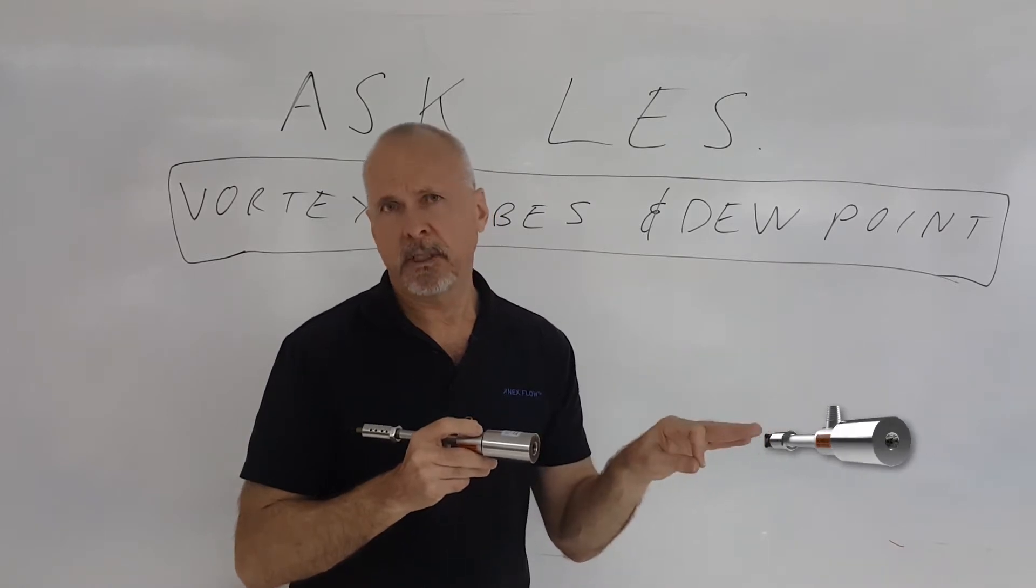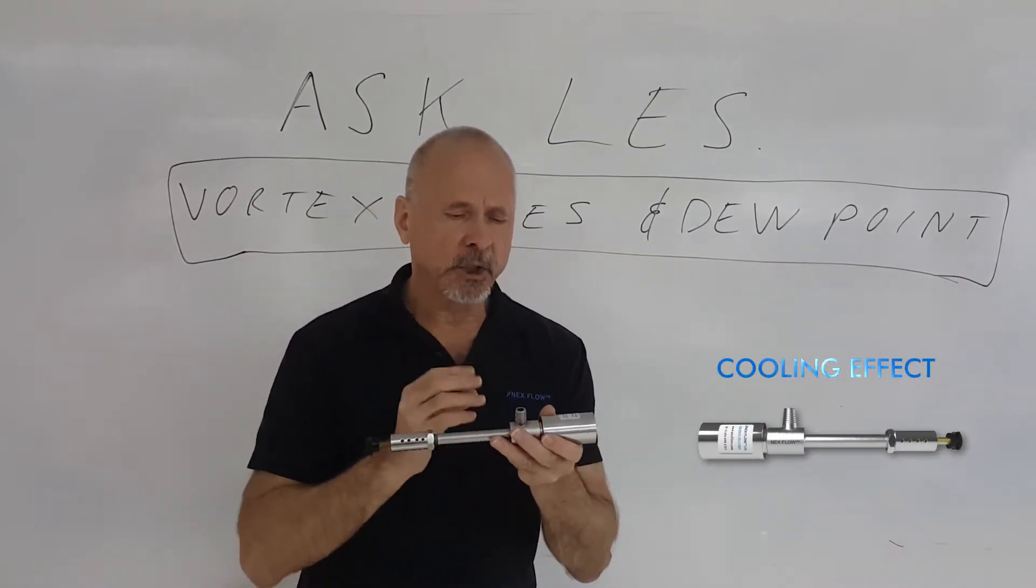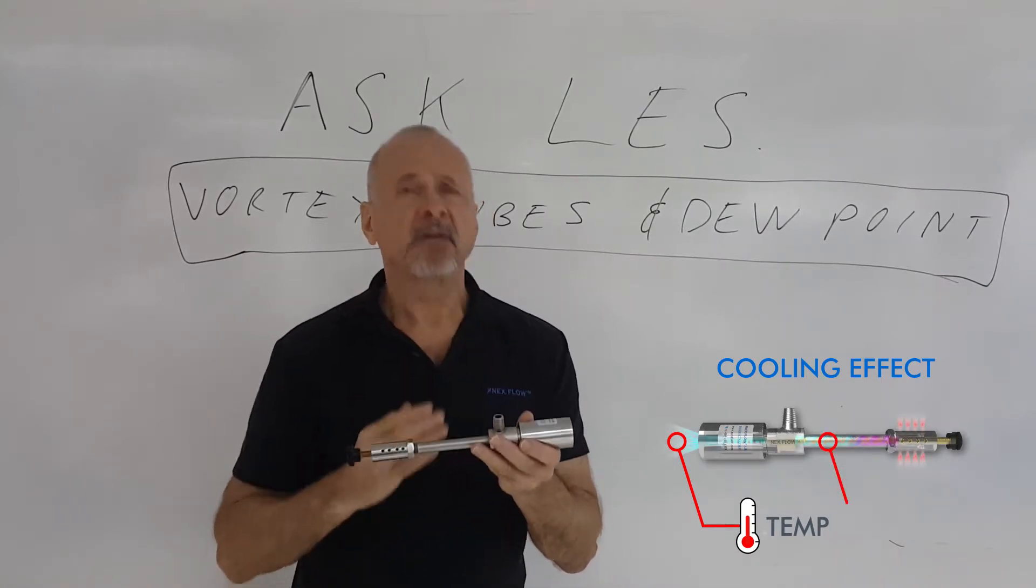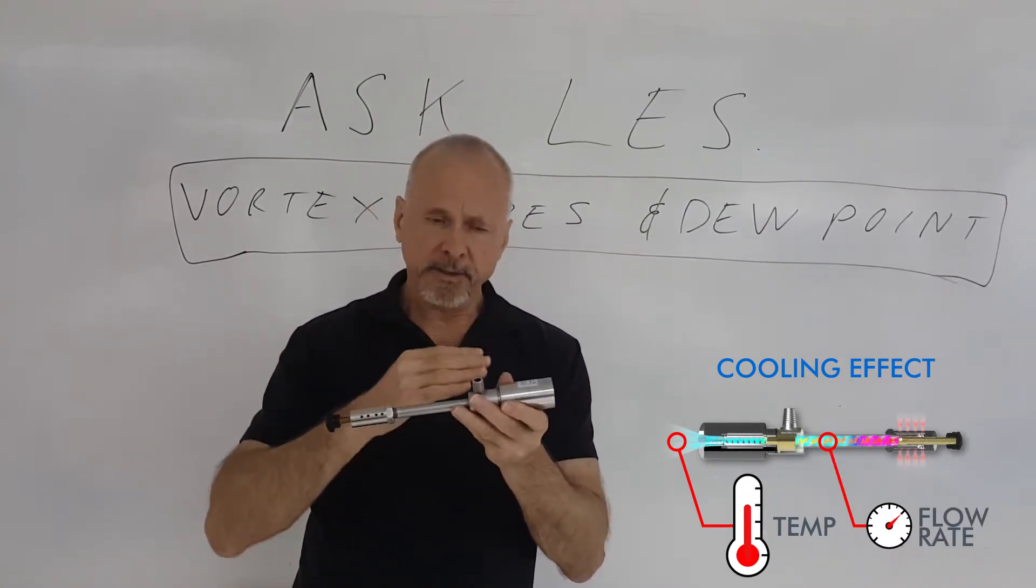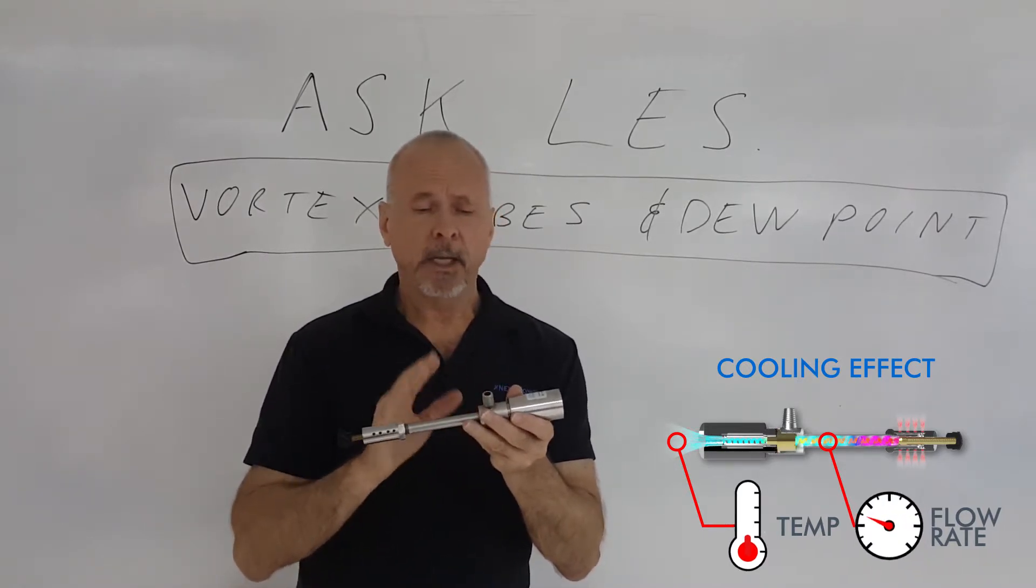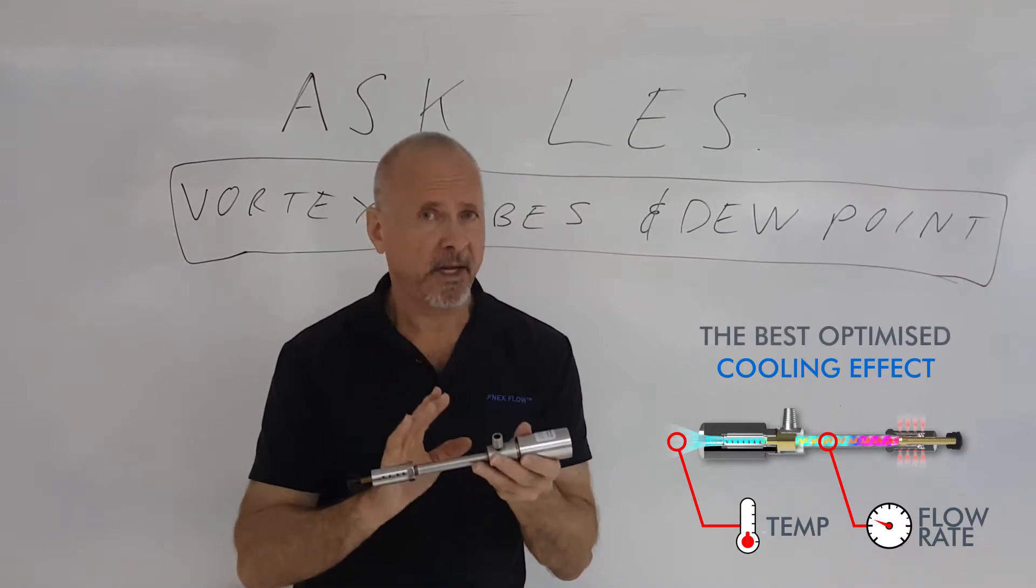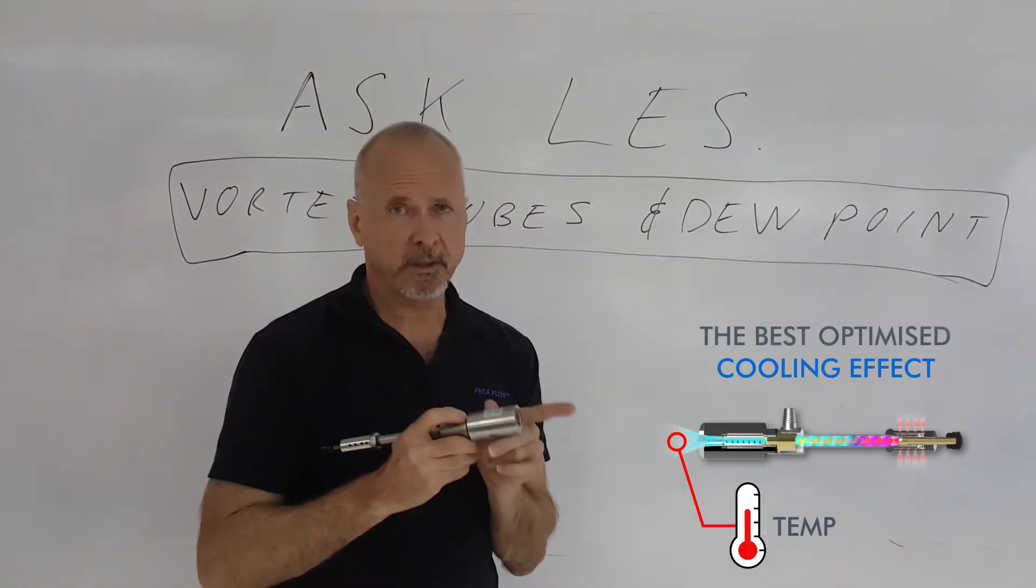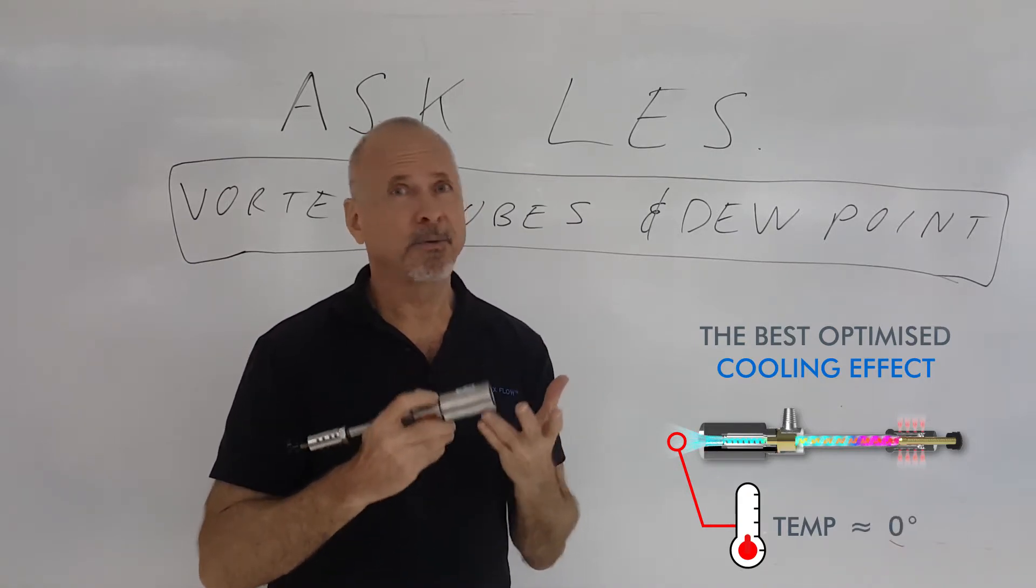Cooling effect is determined by two things: the cold temperature coming out and also the flow rate. The colder the temperature, the lower the flow rate coming out. So in actual fact, the best cooling effect is when the temperature coming out of the vortex tube is around zero degrees Celsius.